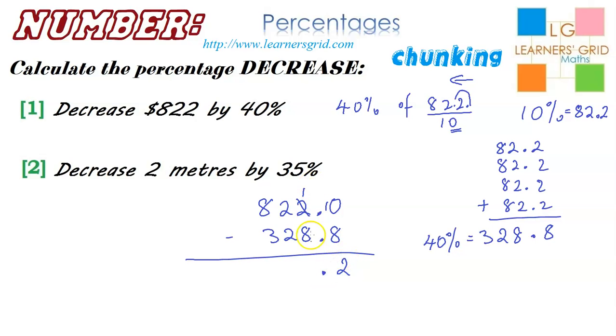We're up to the decimal point. 1 minus 8 we can't do. We need to borrow. So, 11 minus 8, that's 3. 1 minus 2 we can't do, so borrow yet again. That becomes a 9, 11 minus 2. And 7 minus 3 is 4.